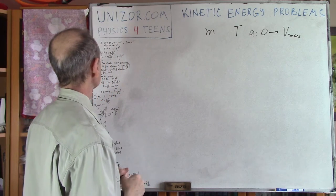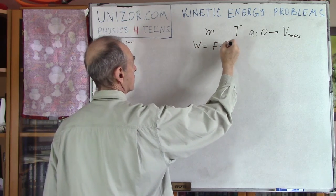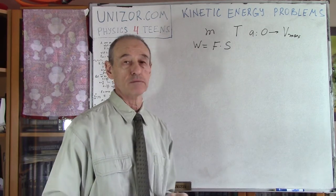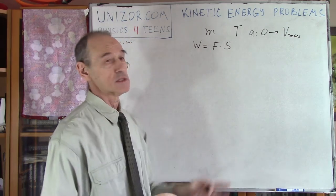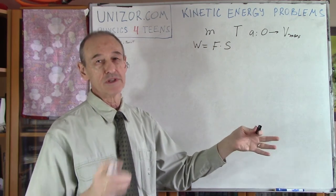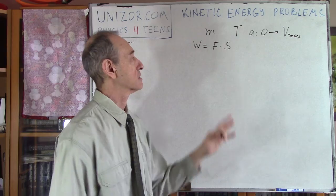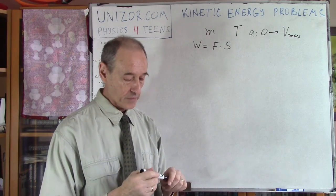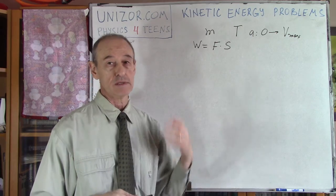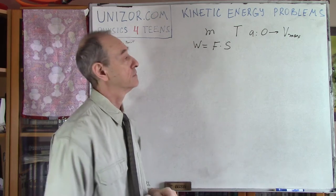Let's do it one thing at a time. First, speaking about work — work is equal to force times distance, in the case of straight-line motion with a constant force. Force is constant because mass is assumed constant — we ignore losses of mass from burning gas. The mass is the same and acceleration is constant, so the force is constant. If a constant force acts over distance s, you get this formula for work. That's the definition.